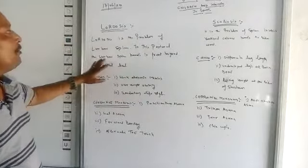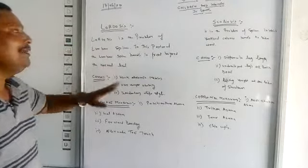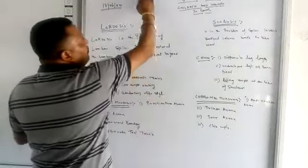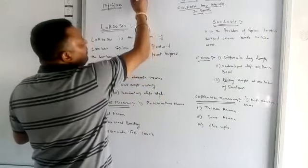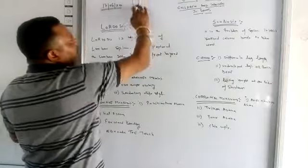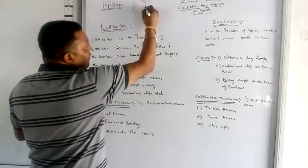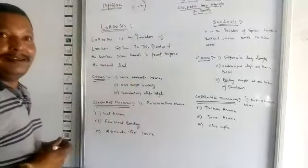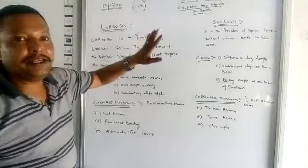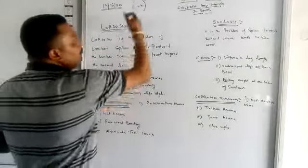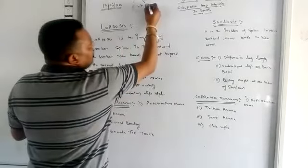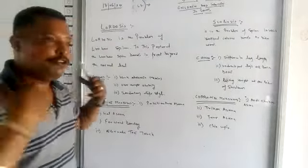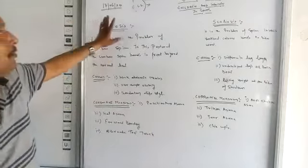In this postural deformity, Lordosis is the problem of the lumbar spine where the lumbar spine bends forward beyond the normal level. If we look at the normal curve of the spinal cord, it has a standard shape, but in the Lordosis problem an abnormal curve develops in the lumbar spine. This causes the Lordosis postural deformity in the human body, where the stomach part goes forward beyond the line of the shoulder.